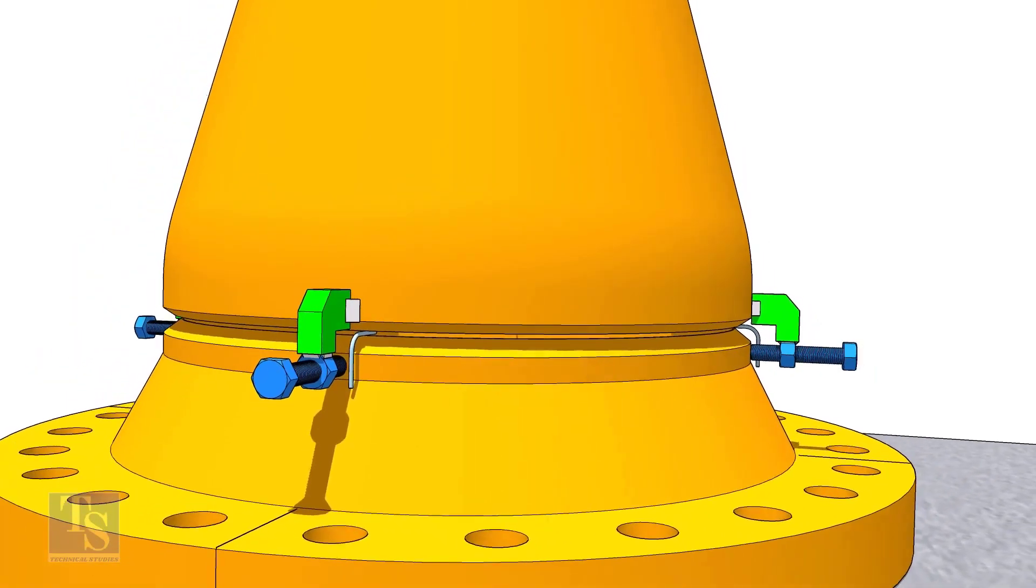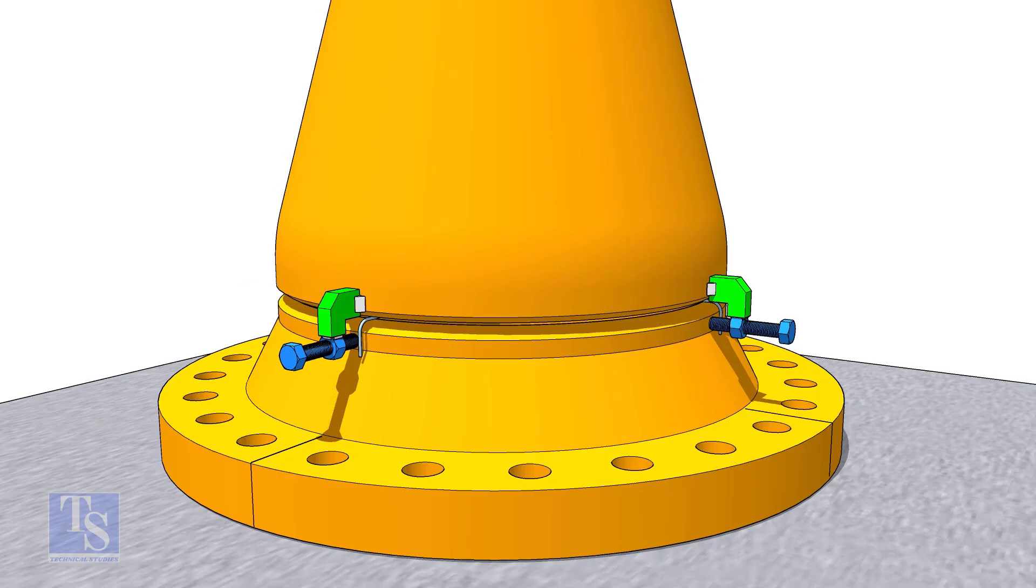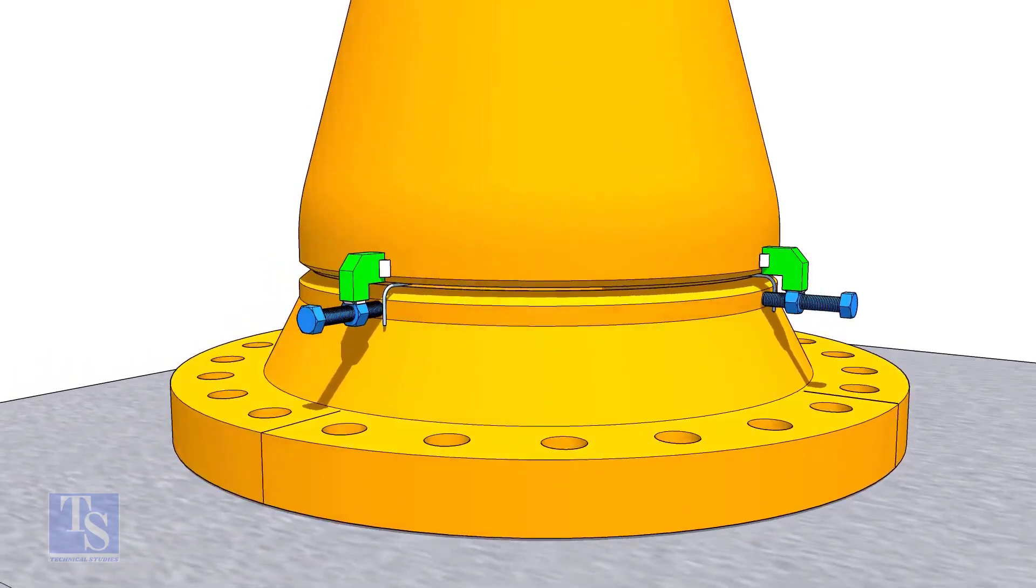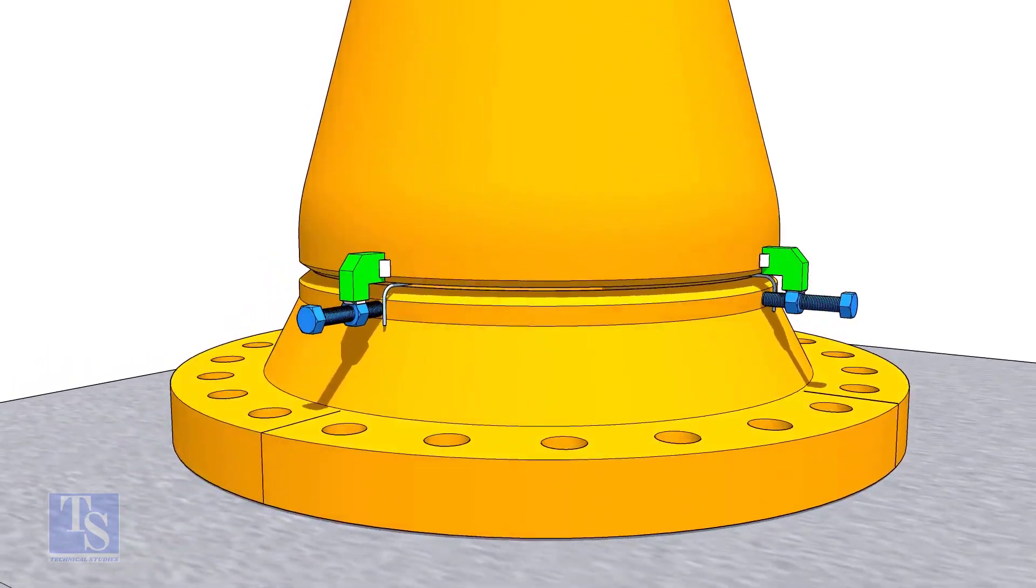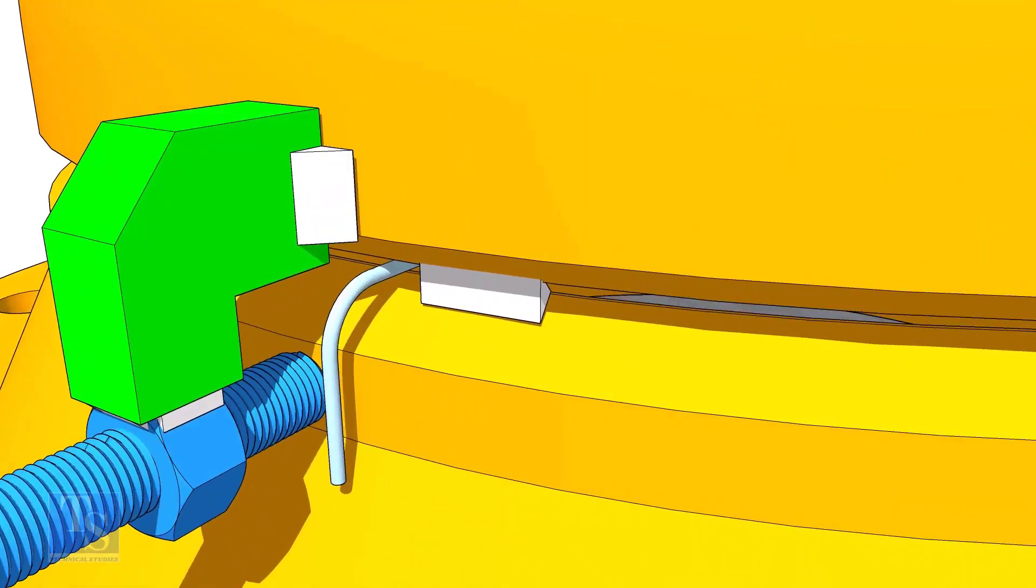Tack weld the jack bolts on the reducer roughly 90 degrees apart. Tighten the jack bolts until the reducer axis and flange axis are in line. Now tack weld the flange with the reducer in opposite side sequence like 0 to 180 then 90 to 270 degrees.